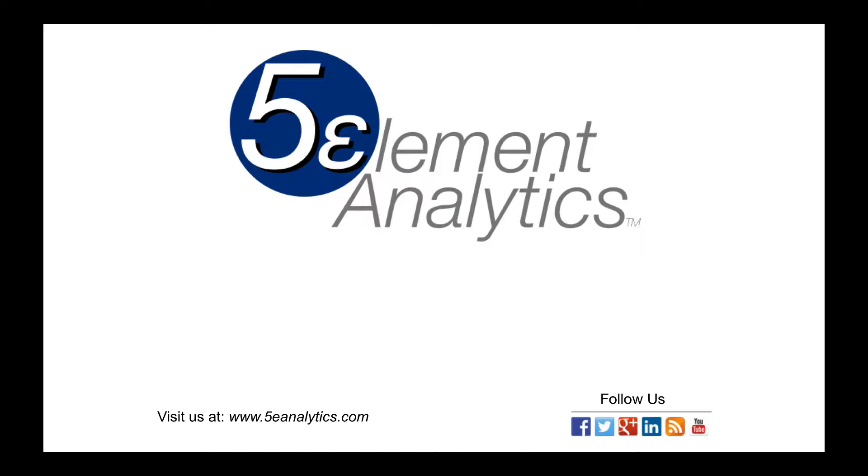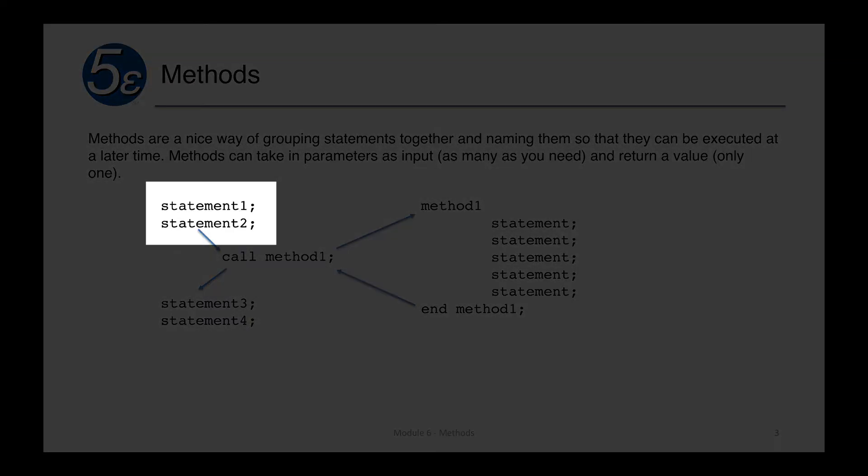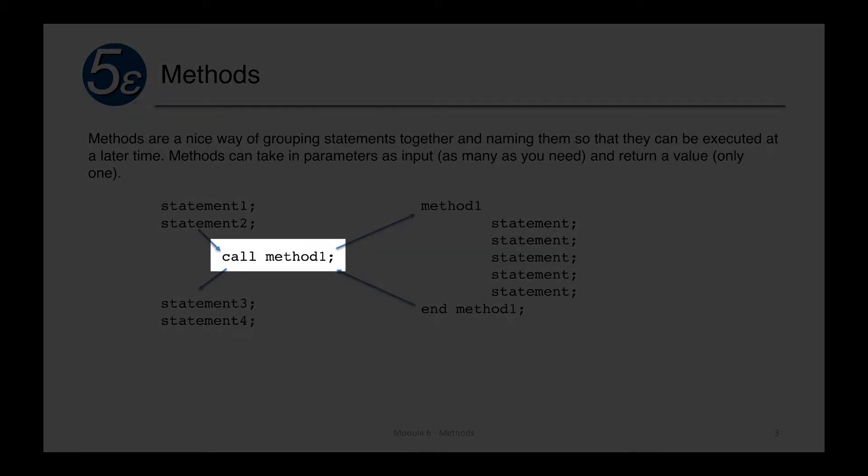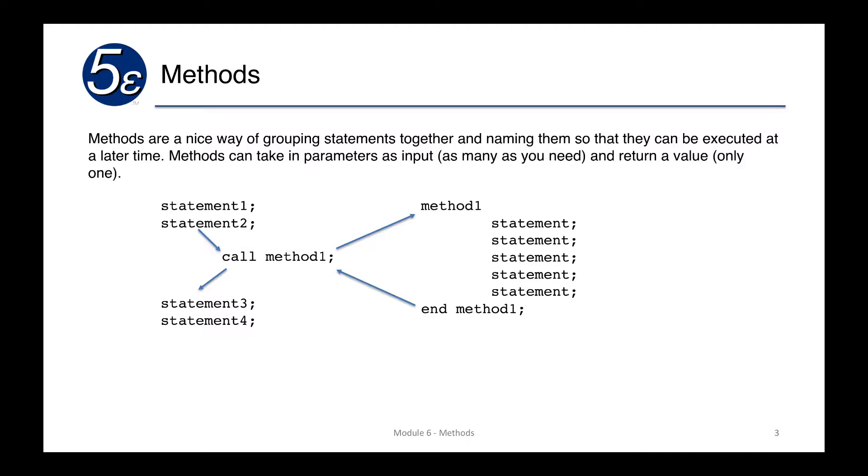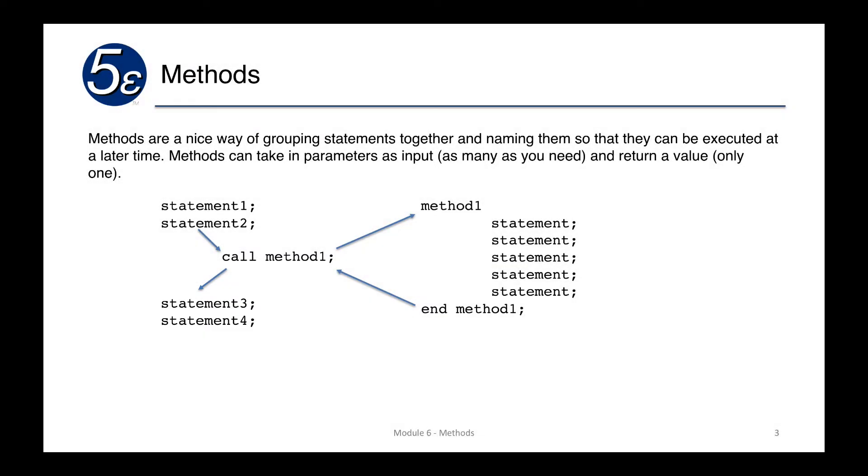When we talk about methods, basically we're grouping some statements together. In general, this is what it looks like: we have some block of code that we're working with, say in our main function, and we'll make a call to method one. The instruction pointer for the computer will actually jump to the location where method one is and execute the series of statements that are within method one. Upon completion, it will return back to the call block of code where it had left off.